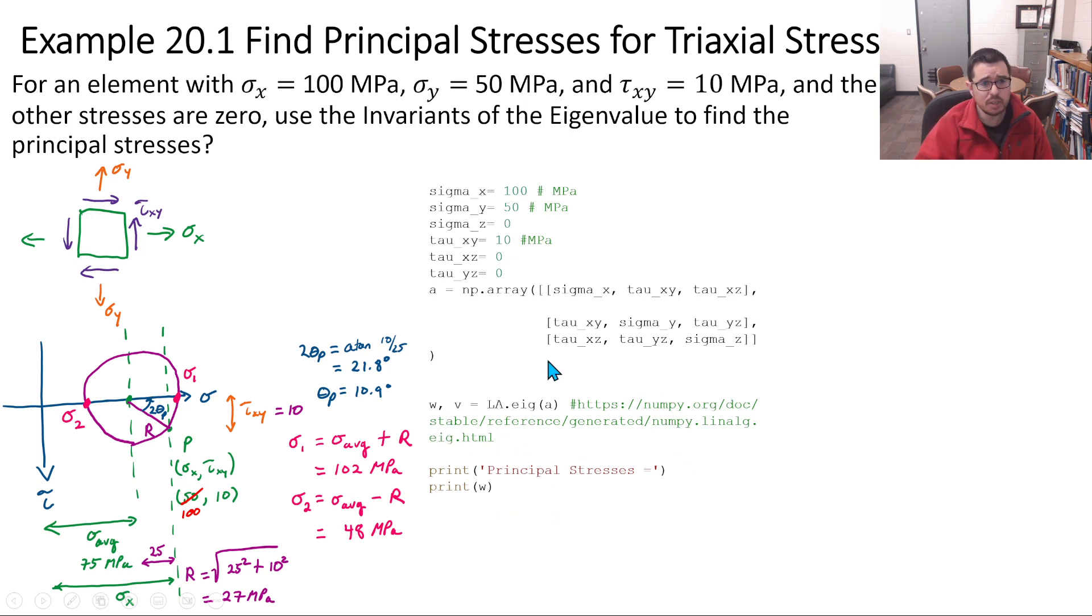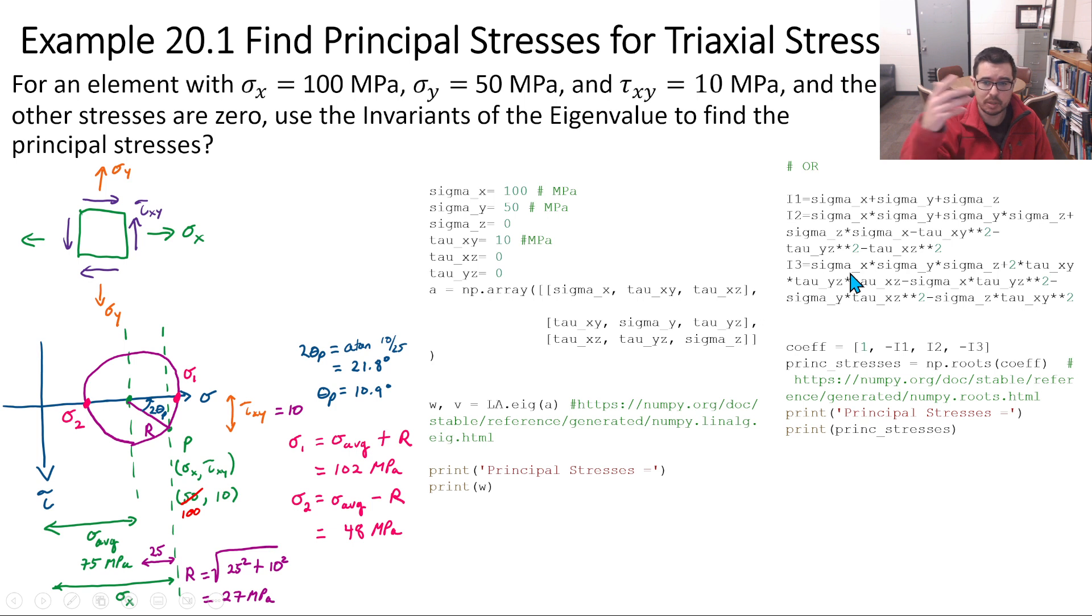This is one way to do it in Python. The other way is to implement what we showed on the previous slide with the invariants. So that's been implemented here, I just typed it all out, and then come up with the coefficients for being able to solve the roots and then using roots solver in numpy and getting the principal stresses. So when you do this, the principal stresses output that you get are the same in this particular case, at least to all the many unnecessary decimal places that you see here.